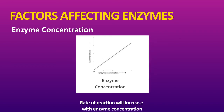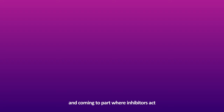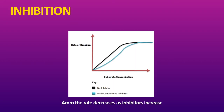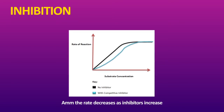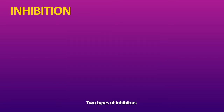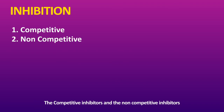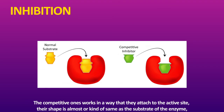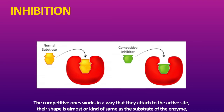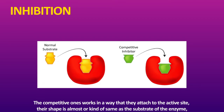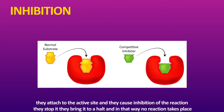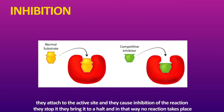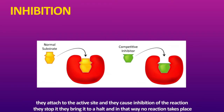Coming to the part where inhibitors act — the rate of reaction decreases as inhibitors increase. There are two types of inhibitors: competitive inhibitors and non-competitive inhibitors. Competitive inhibitors work by attaching to the active site. Their shape is almost the same as the substrate of the enzyme. They attach to the active site and cause inhibition of the reaction — they stop it, they bring it to a halt, and no reaction takes place.